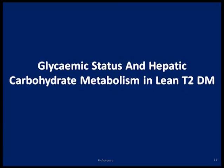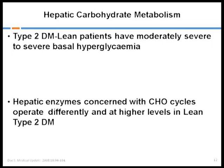Does this lean habitus cause some abnormality or specific differences in glucose and insulin handling? Studies have been done to answer this. It was shown that hepatic carbohydrate metabolism in lean type 2 diabetes is different — these patients have moderately severe to severe basal hyperglycemia. Hepatic glucose output contributes to this basal hyperglycemia, and when they present they have very high HbA1c levels. The hepatic enzymes involved in carbohydrate cycles operate at higher levels in lean type 2 diabetic patients.